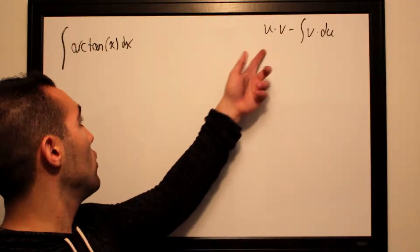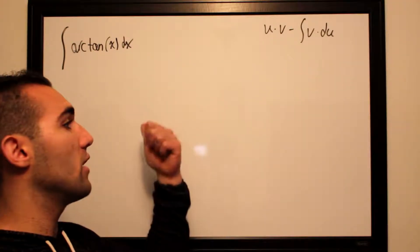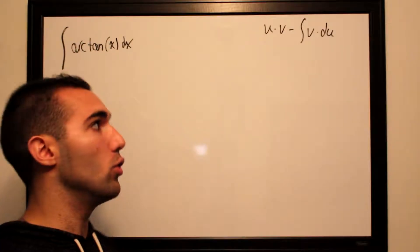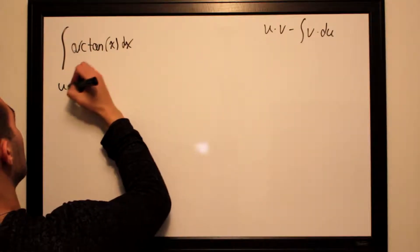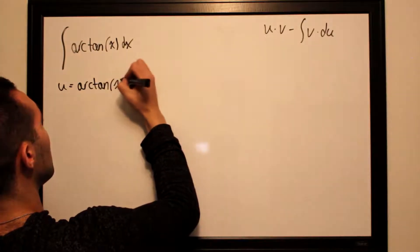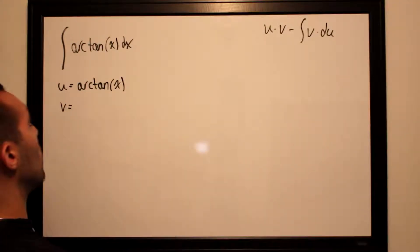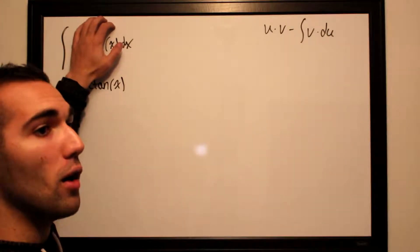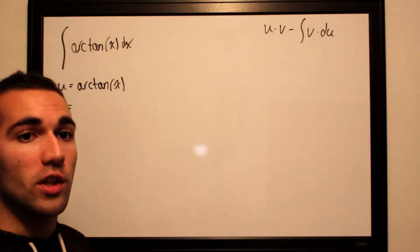What we're going to do to take this integral is set arctangent of x as our u. So u equals arctan x. V is going to be whatever you cover up. You cover up your u and whatever is left over is essentially your v.